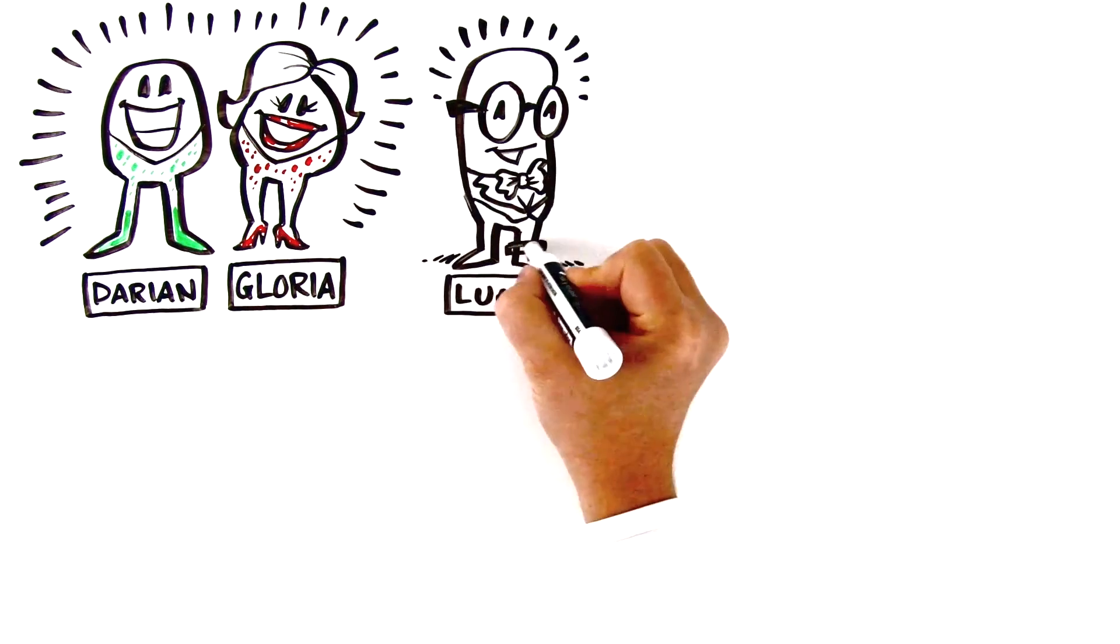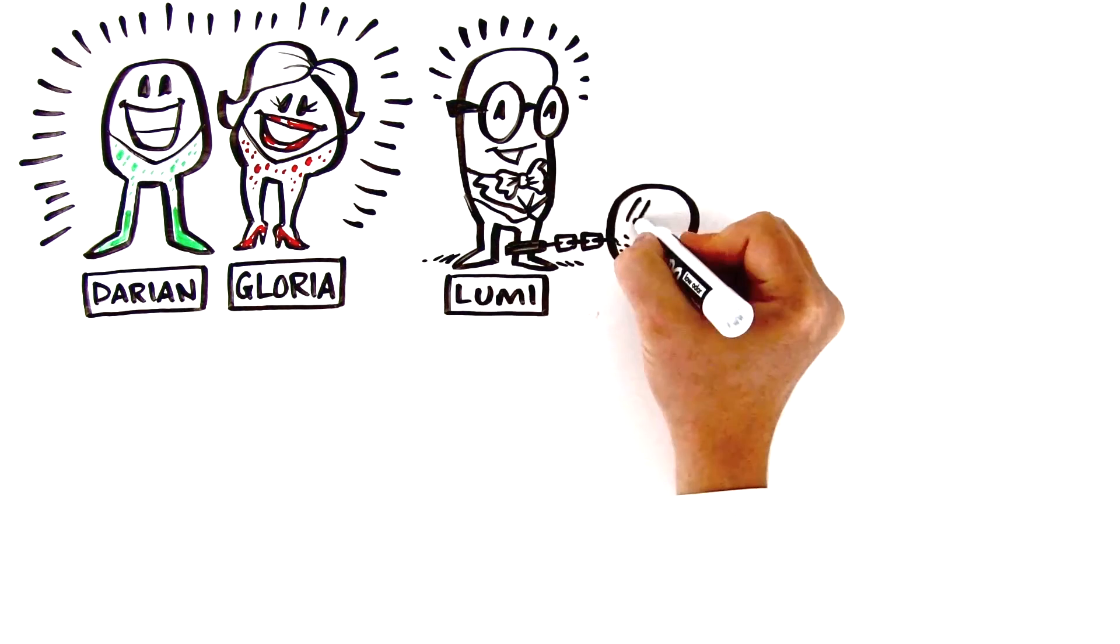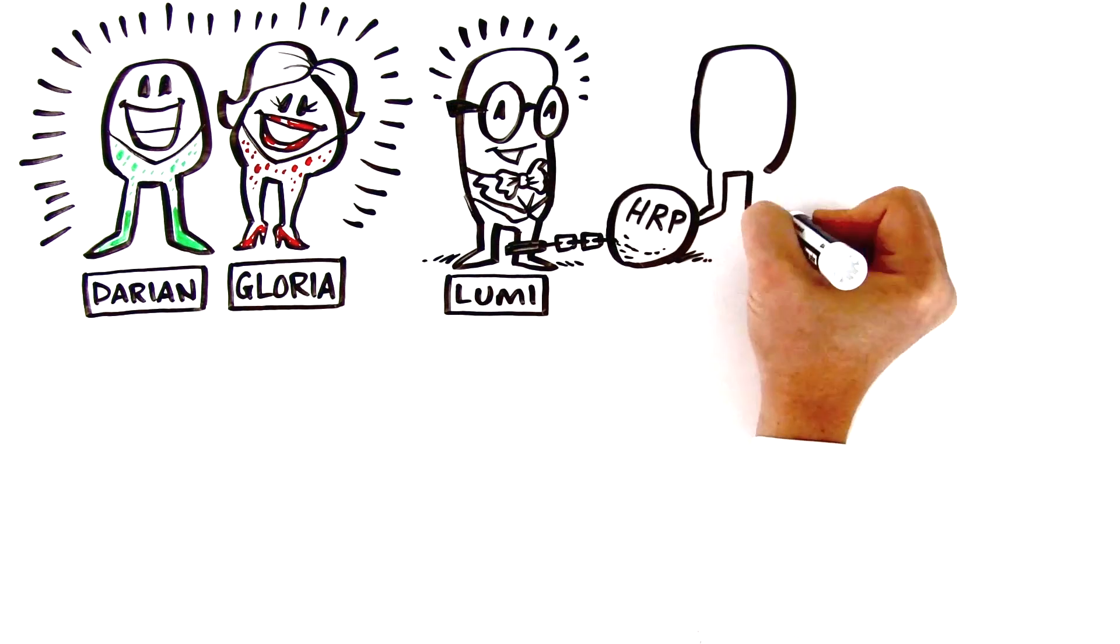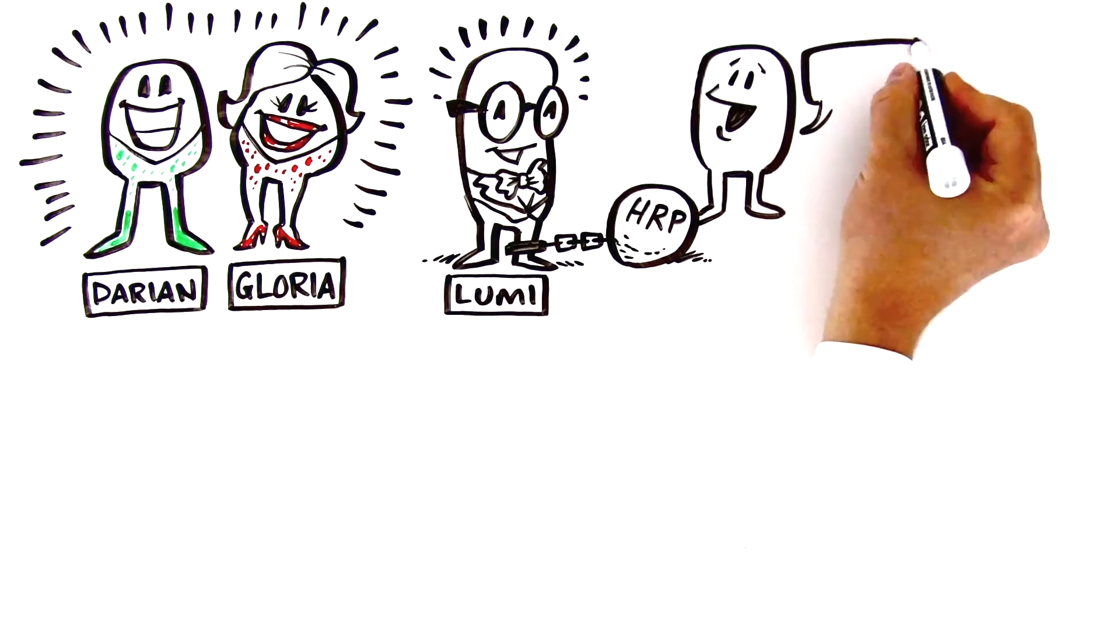All he owns are white dress shirts, and he's practically married to his company, HRP. In fact, he's so bland, he only has one protein friend at a time.